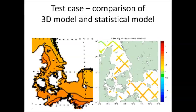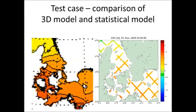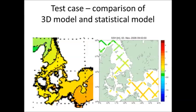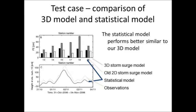This shows the development of the storm. Importantly, the two plots are completely independent, so one can be used to validate the other. If our ocean model broke down for some reason, we could actually use the blended method to give a completely independent estimate. So that works quite well, and we can also calculate some statistics.